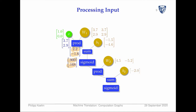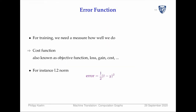Then we repeat this for another layer. We have this vector multiplied with the weight matrix — this weight matrix is now a 2-by-1 matrix, so we only get one value out. We add in the bias term and compute the sigmoid. That's the calculation we do.